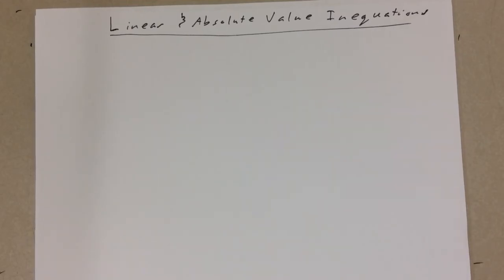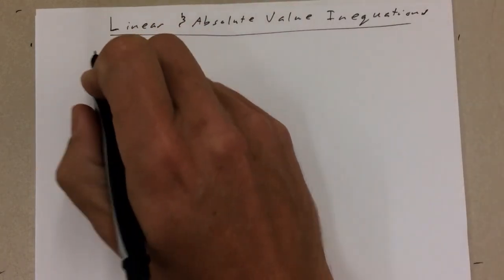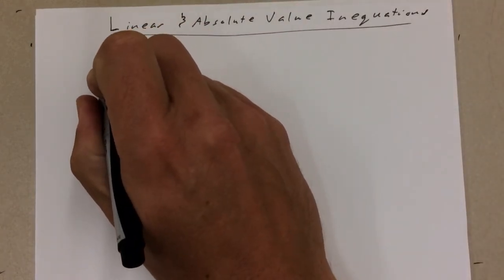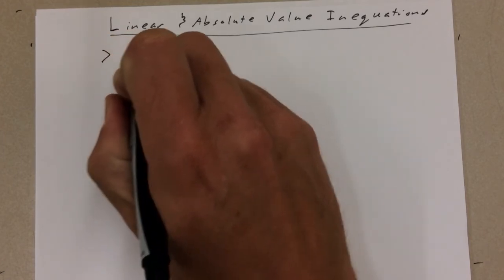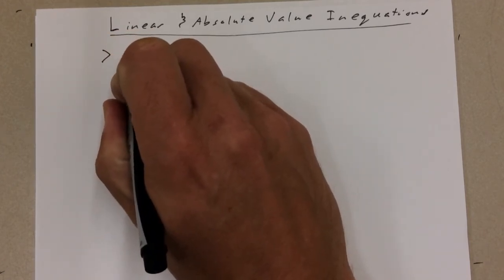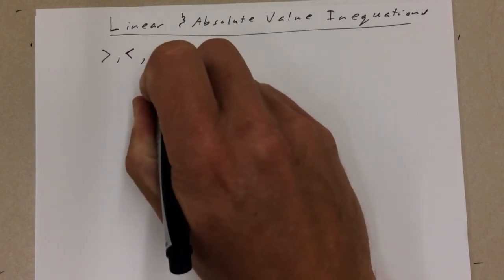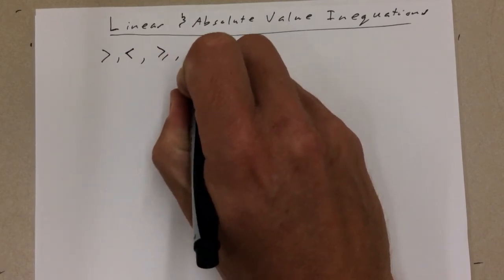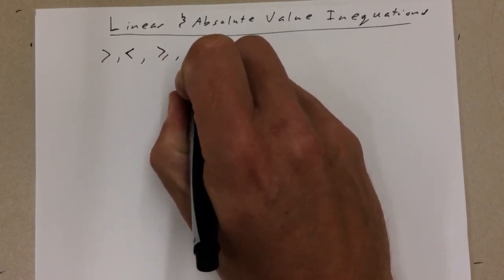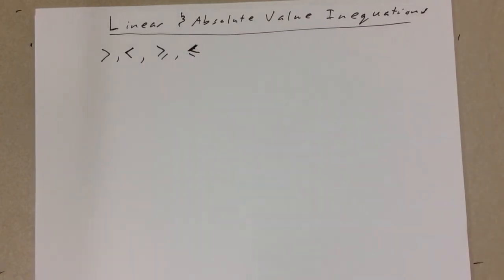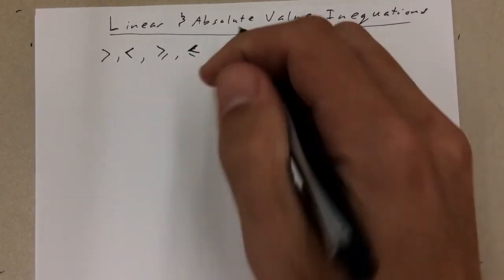In this video we're going to look at linear and absolute value inequalities. So let's start off with what an inequality is. Basically when we've got signs like greater than, less than, greater than or equal to, less than or equal to — those are inequality signs, as opposed to the equal sign.